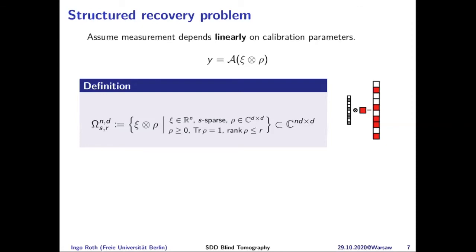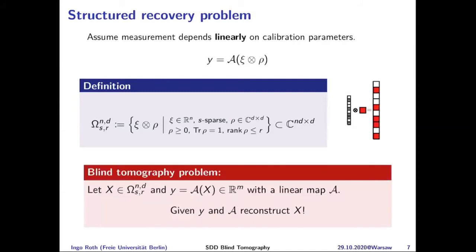The blind tomography problem is now formulated as a linear inverse problem. Given a vector Y produced by a linear map acting on a signal X = C ⊗ ρ, the signal is highly structured: it's the outer product of a sparse vector and a positive low-rank matrix (a low-rank quantum state, trace-normalized). The non-vanishing entries are the same state rescaled by the calibration parameter. The blind tomography problem is: given Y, reconstruct X under the assumption that X lives in this structured set.